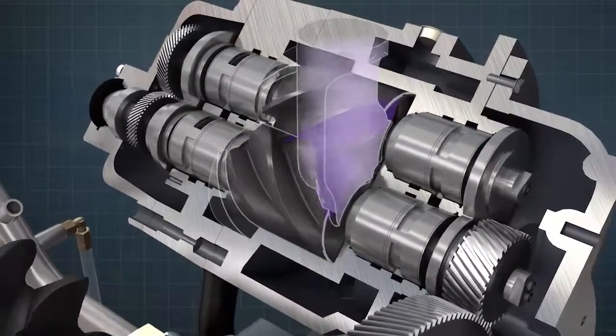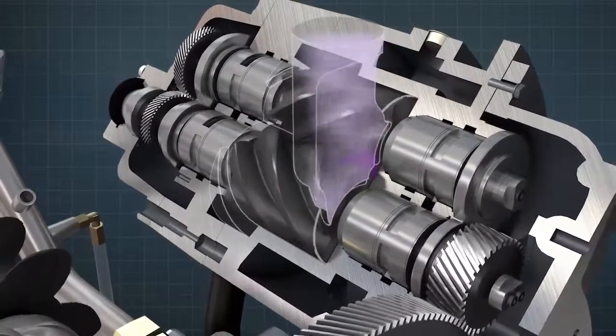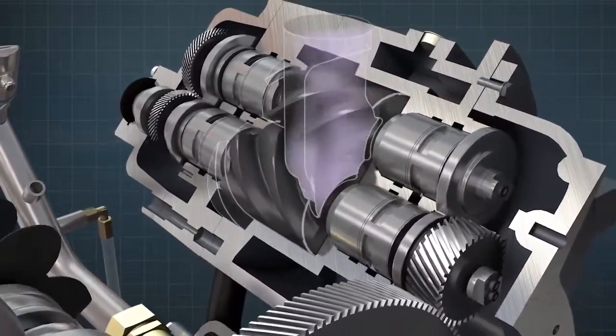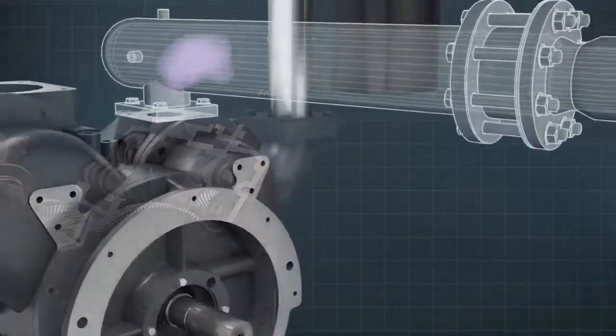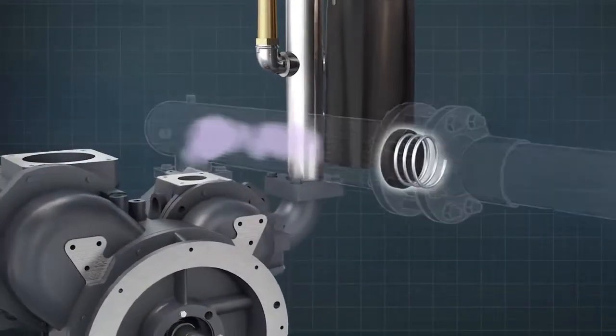However, this time, the compression process takes place on the upper side of the rotors. The compressed air exits the air-end via a delivery silencer, then through a non-return valve.